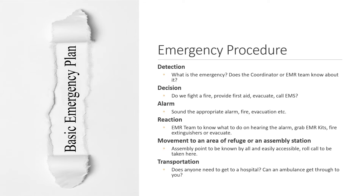The next sequence would be moving to an area of refuge or assembly station. This assembly point should be known by every single person and be easily accessible, so that your route of exit in order to get to a safe assembly point must be easily available for every single person. A roll call should also be taken at the assembly point so that you know who is there and who is not, in case you need to go back into the building and do a sweep of those who potentially could still be inside. This is why it's important to know at any given time who is in the building and who is not.